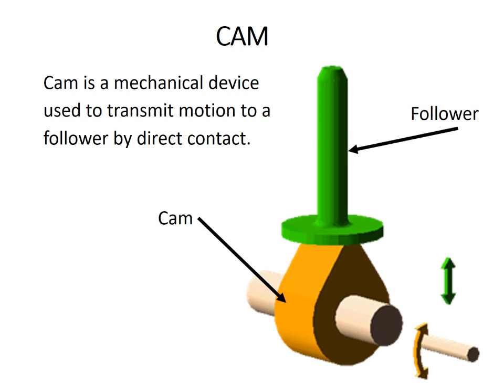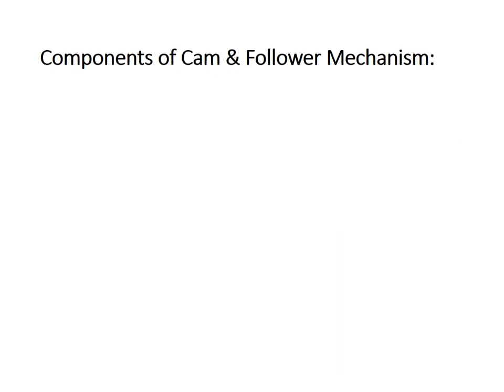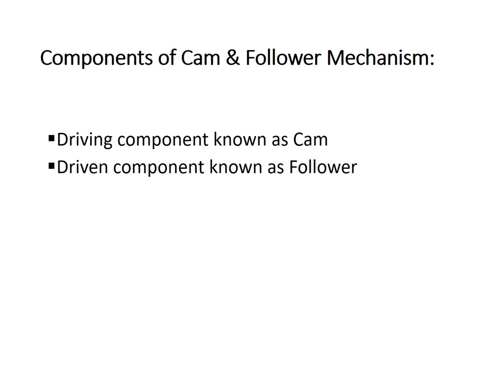Now, how we can define CAM? CAM can be defined as a mechanical device which is used to transmit motion to a follower by direct contact. The basic components of CAM and follower mechanism are: a driving component which is used to provide desired motions to the follower, known as CAM; a driven component which is desired to be driven with desired motions, known as follower; and for supporting driving and driven components, we need supporting structures known as the frame.